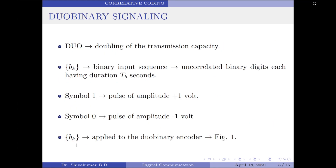Let us now start the discussion on duobinary signaling. The word duobinary signaling implies doubling the transmission capacity of a binary system. We are considering a binary system here. Let us consider a binary input sequence Bk consisting of uncorrelated binary digits each having a duration of 1 Tb seconds. Let symbol 1 be represented by a pulse of amplitude plus 1 volt and symbol 0 by a pulse of amplitude minus 1 volt — we are representing symbols using polar format.